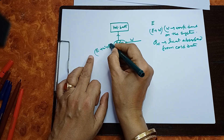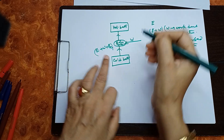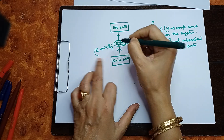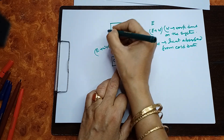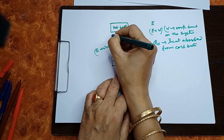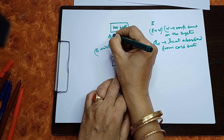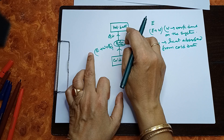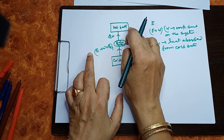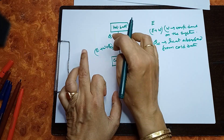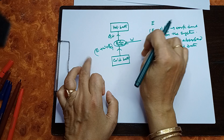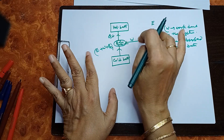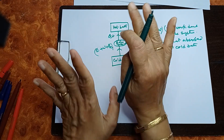With this total energy E plus W plus QC, the system delivers QH amount of heat to the hot reservoir or hot bath. This completes the entire refrigeration process — that is the Carnot refrigerator or refrigeration process.